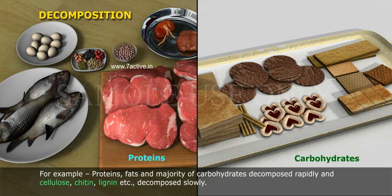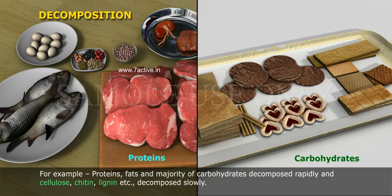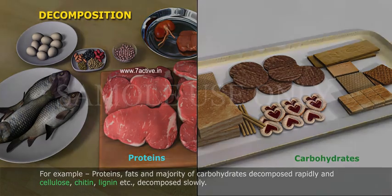The rate of decomposition of organic compounds varies. For example, proteins, fats and the majority of carbohydrates decompose rapidly, while cellulose, chitin, lignin, etc. decompose slowly.